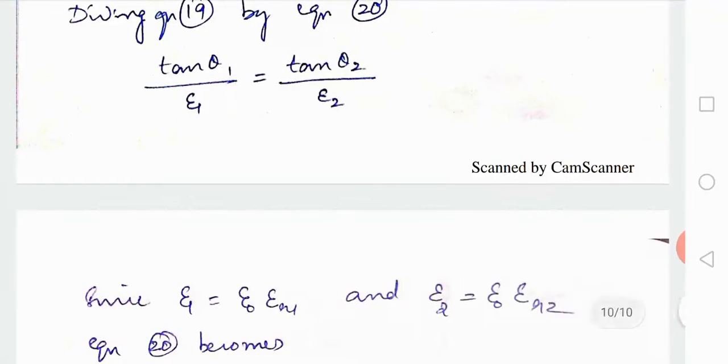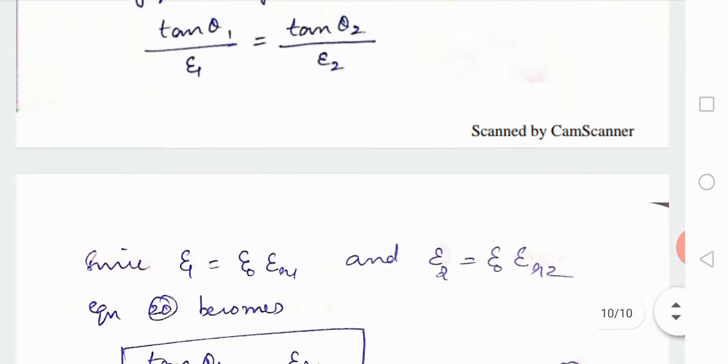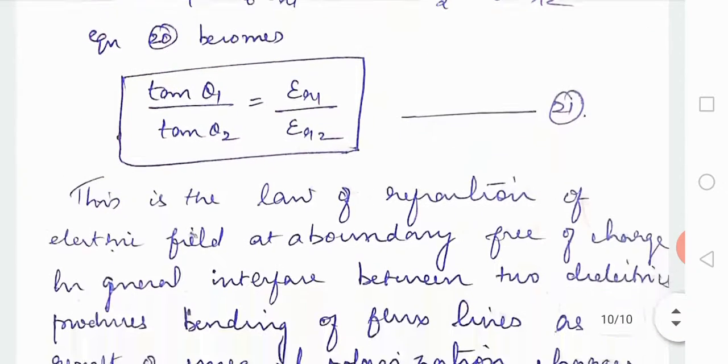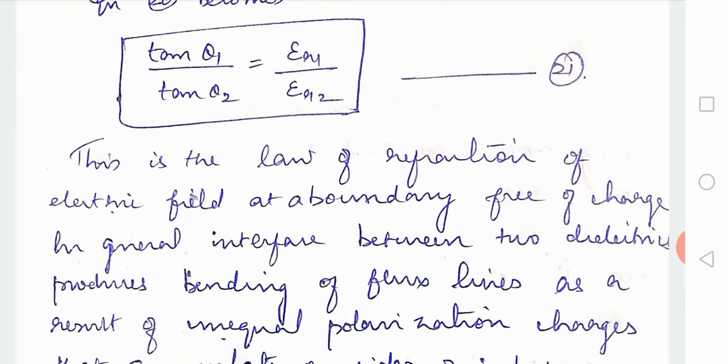Since epsilon 1 is equal to epsilon 0 epsilon r1 and epsilon 2 is equal to epsilon 0 epsilon r2, equation 20 becomes tan theta1 by tan theta2 is equal to epsilon r1 by epsilon r2. This is your 21st equation. This is the law of refraction of electric field at boundary free of charge.